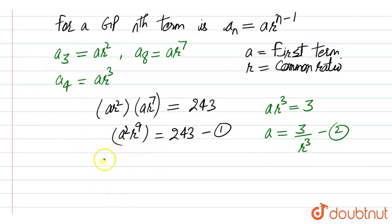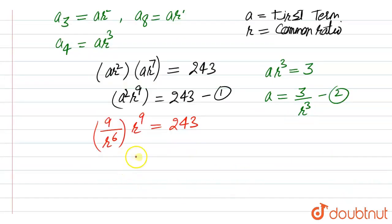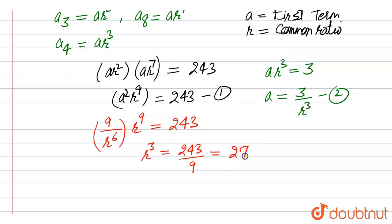Substituting, a² becomes 9/r⁶. So (9/r⁶) × r⁹ = 243. This simplifies to r³ = 243/9, and 243 divided by 9 is 27, giving us r³ = 27.